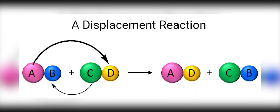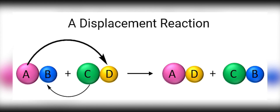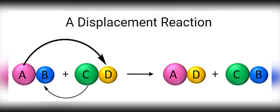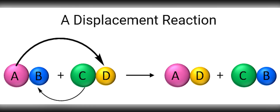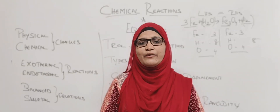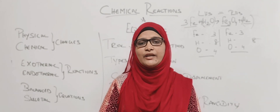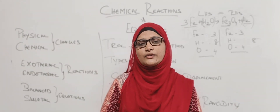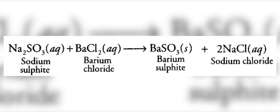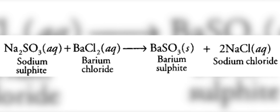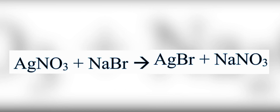Next is double displacement reaction. Here, two reactant molecules combine and exchange their components to form different products. For example, sodium sulphate plus barium chloride gives barium sulphate plus sodium chloride. Another example: silver nitrate plus sodium bromide gives silver bromide plus sodium nitrate.